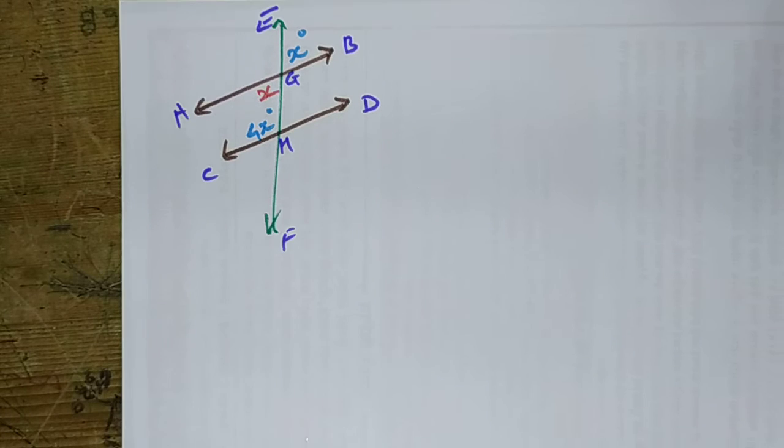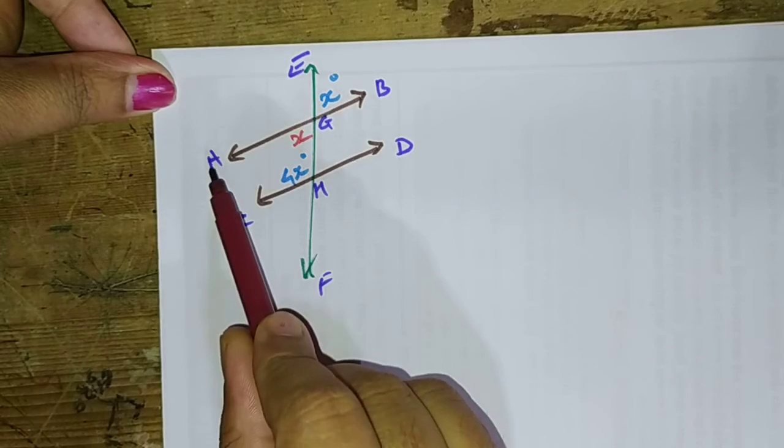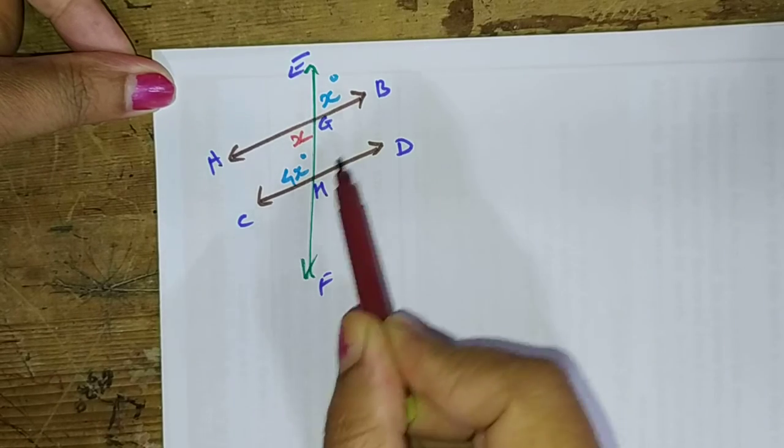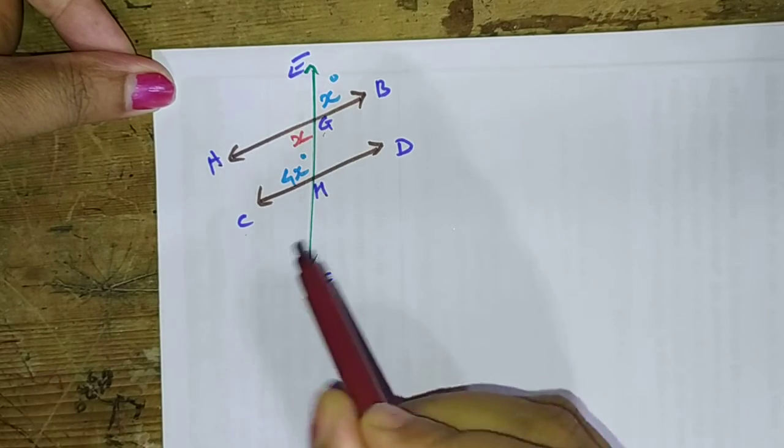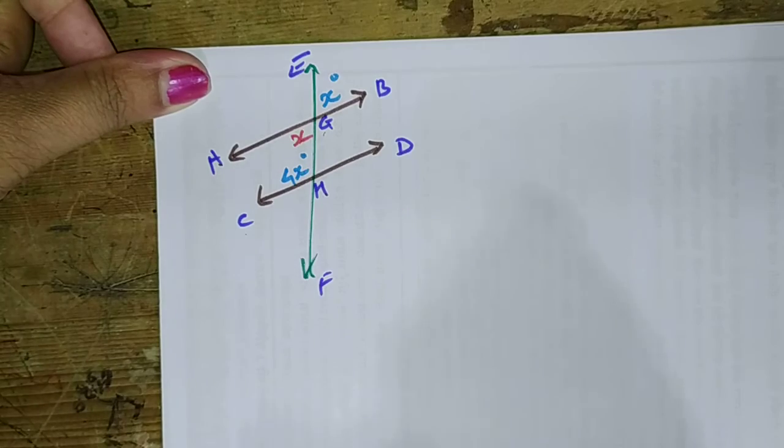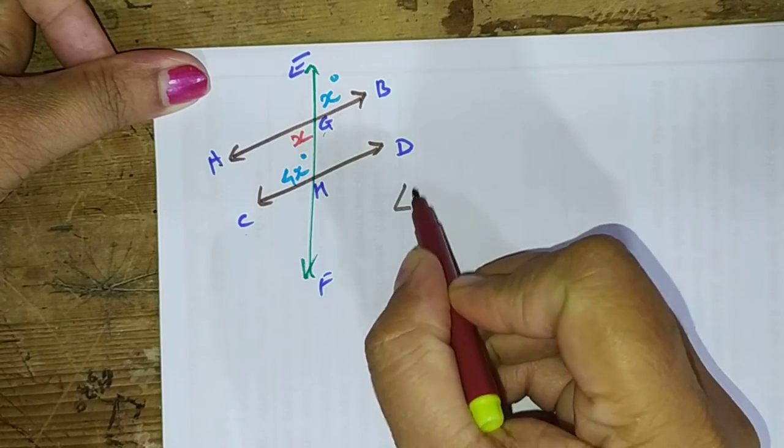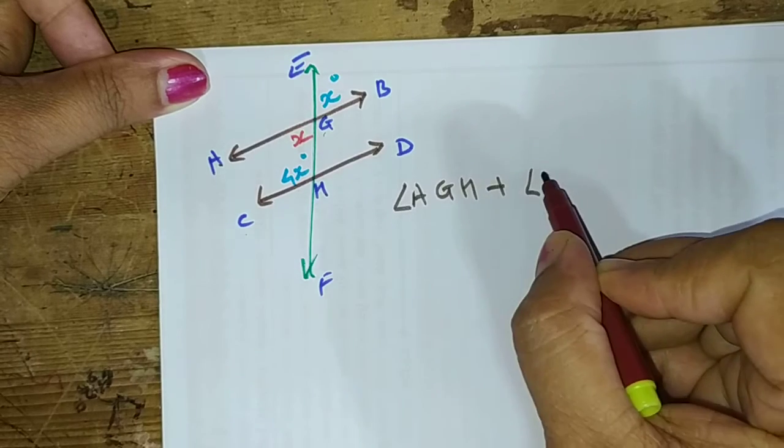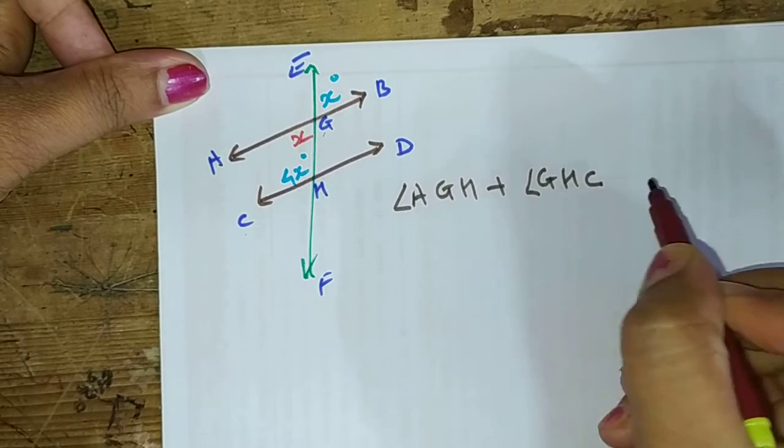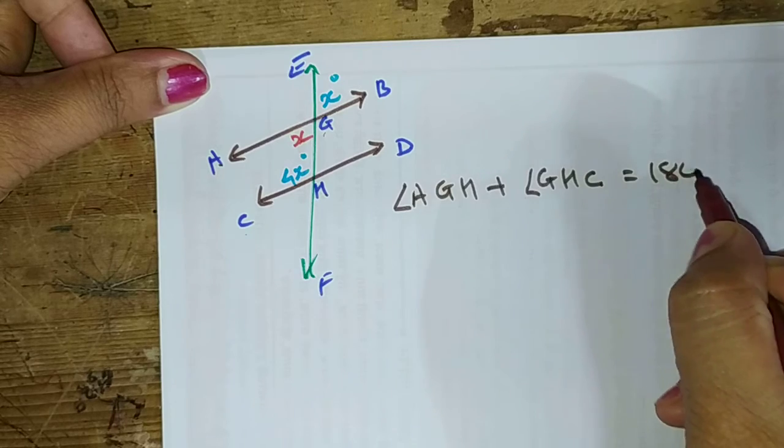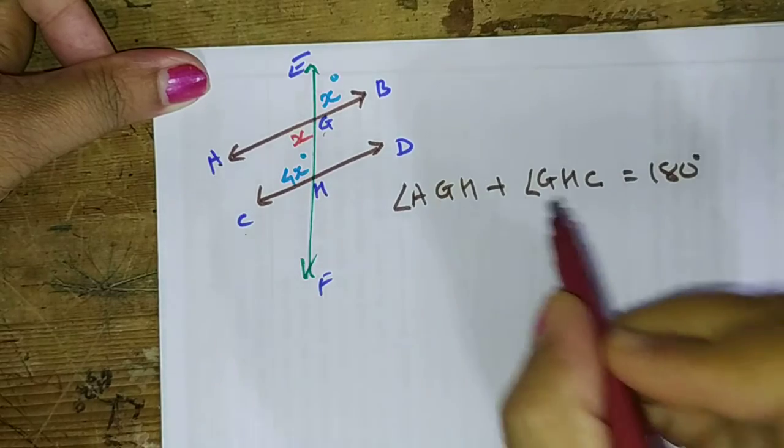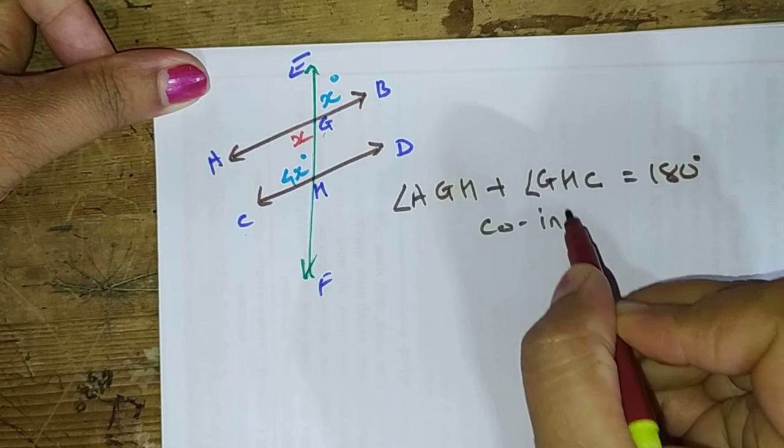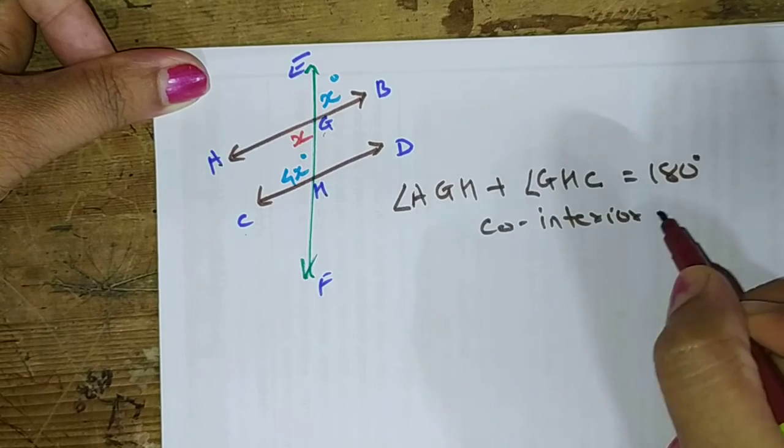This is the first step. Now by the co-interior angles, AGH and GHC, they should sum up to 180. So angle AGH plus angle GHC should sum up to 180 degrees. Because they are the co-interior angles.